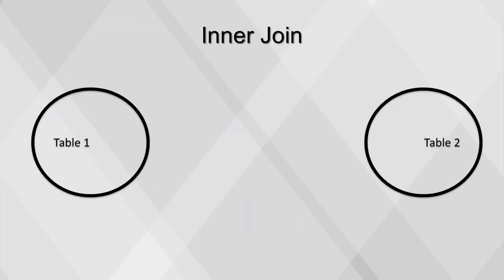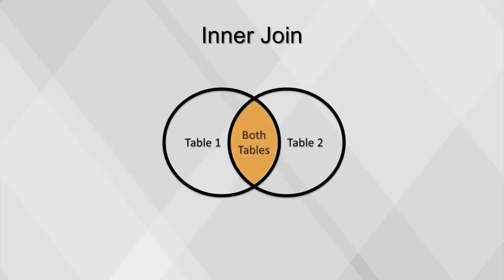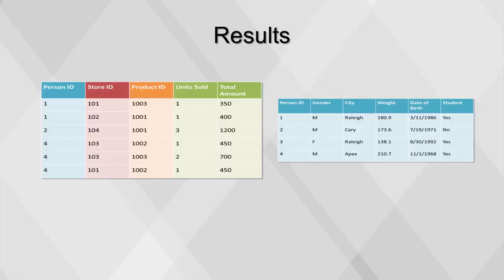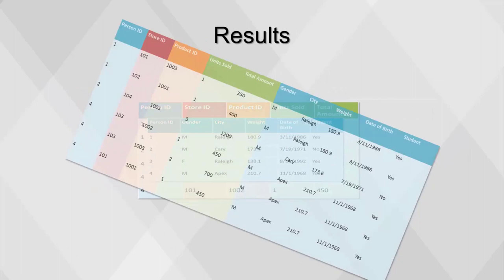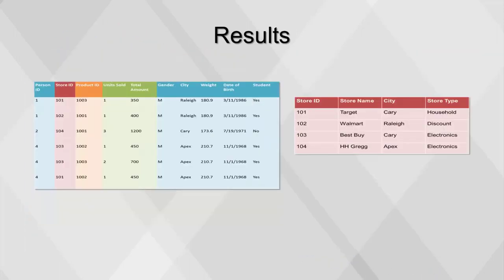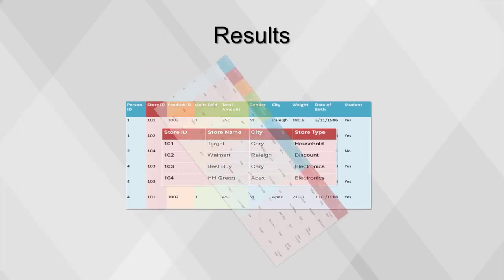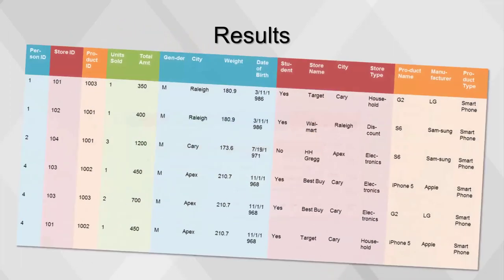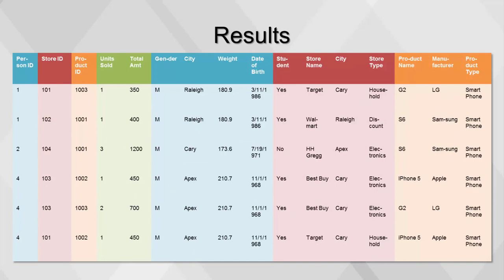To join these tables together, we use an inner join, which returns only rows contained in both tables. When a fact table has null or missing values for a dimension, using an inner join will remove the entire row. Since the row may contain useful data in other fields, it's better to use a left outer join to keep all values from the left (fact) table and the values from the dimension table that match on the key. While there are other types of joins, inner and left outer joins are the most commonly used. We first join the transaction fact with person dimension, then join the result with store dimension, and finally with product dimension—each step creating a progressively larger table.